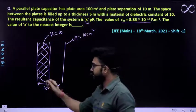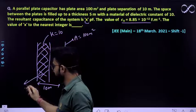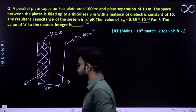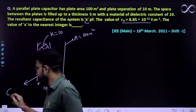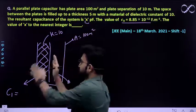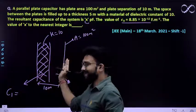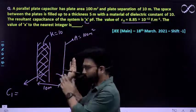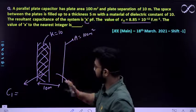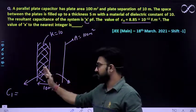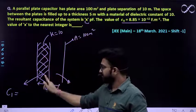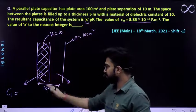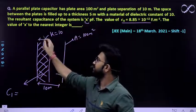We already know ki hum alag-alag separate iska capacitance nikal sakte hain, iska capacitance, iska capacitance kitna hoga. So let iska capacitance c1 hai, itne portion ka, because this will act like a, this whole system, this whole capacitance system will act like a two capacitor system. Jiska ek capacitance hai, jismein dielectric constant filled up hai to a length of 5 meter.